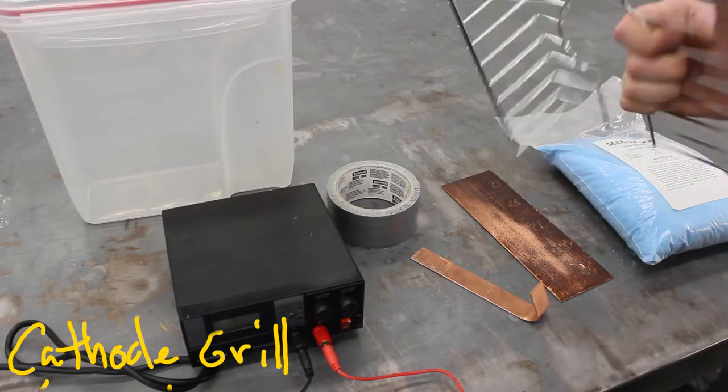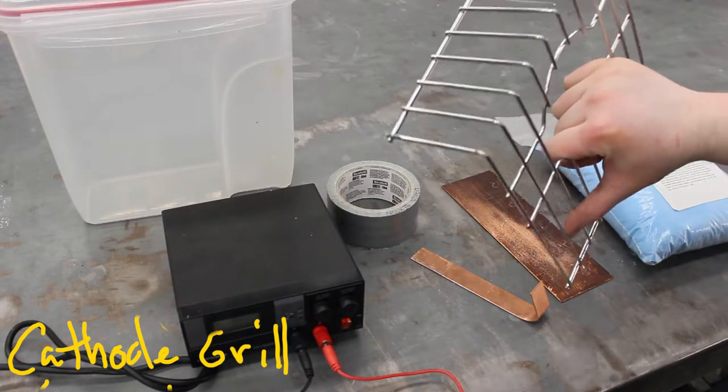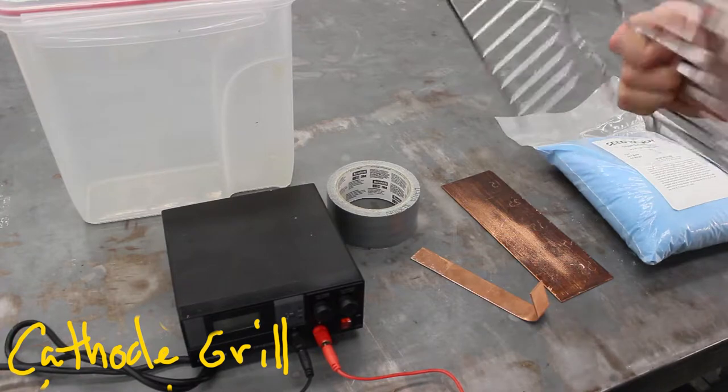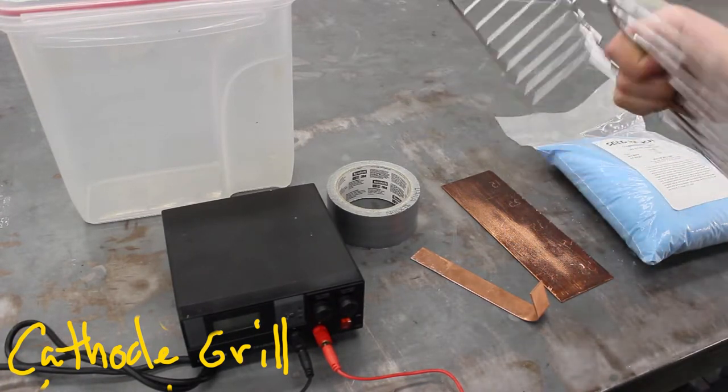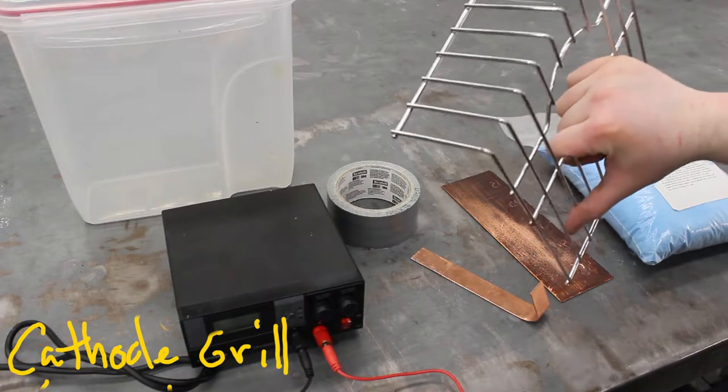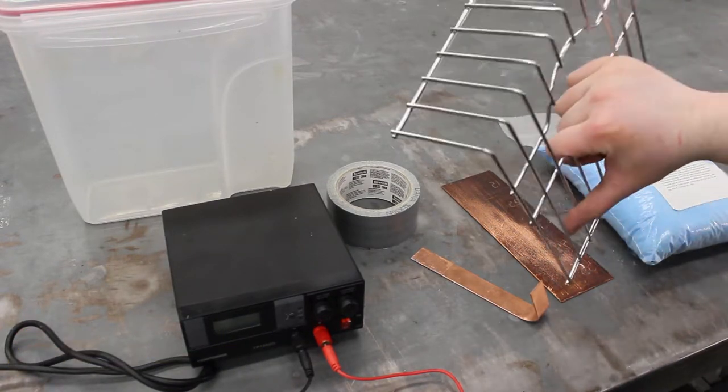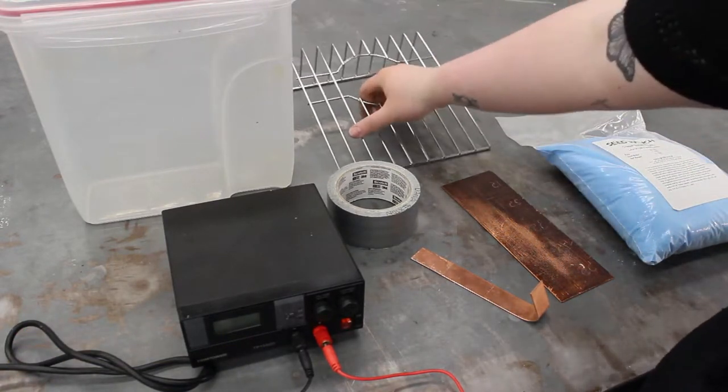Ideally you would be using copper, but if you're on a budget or you can't find it, barbecue grills work. In this case, this is supposed to sit at the bottom of a kitchen sink. I just cut off the ends to fit the tank and bent it at a 90-degree angle to hang over the top, just like the contact strip.